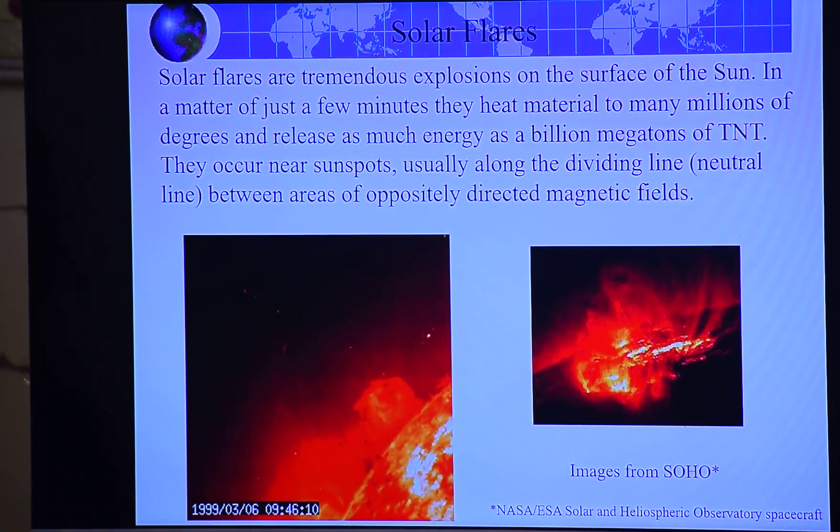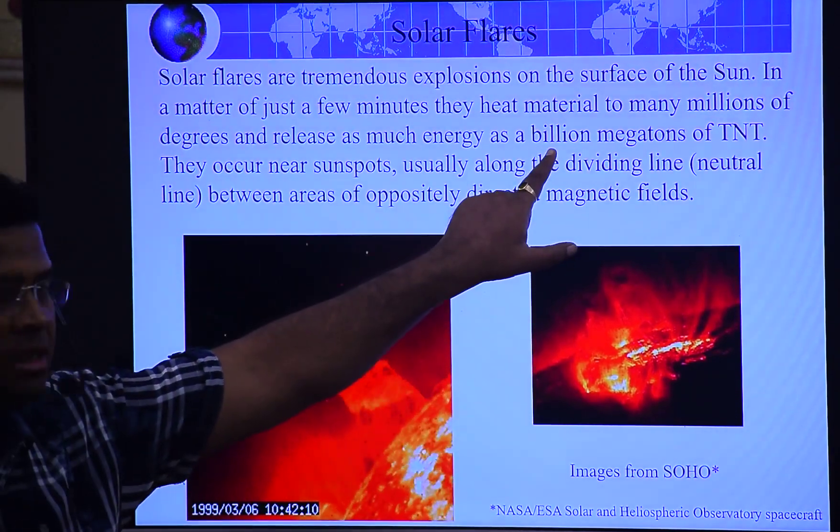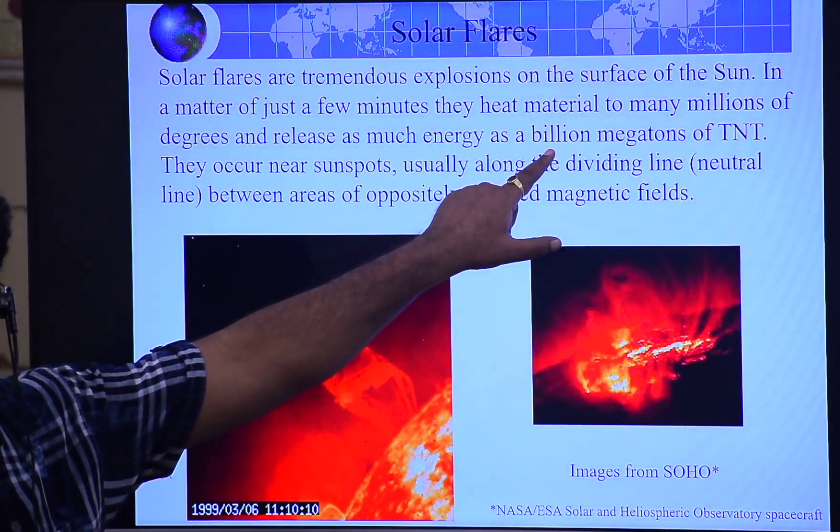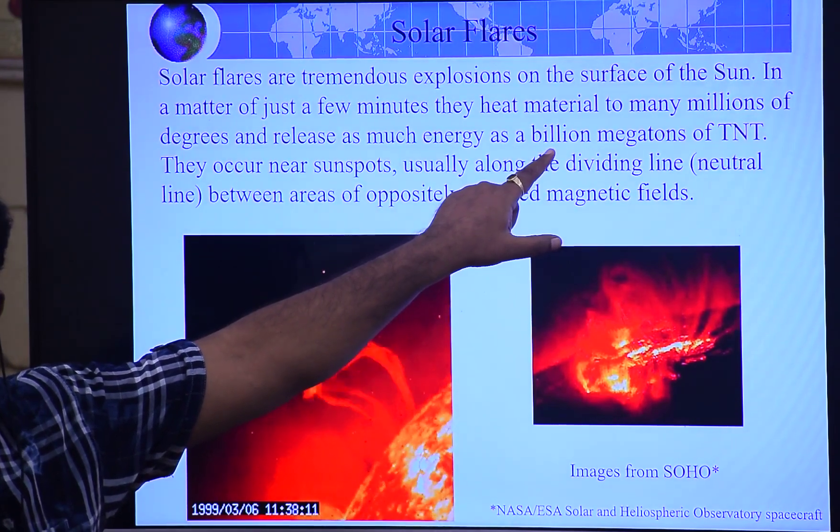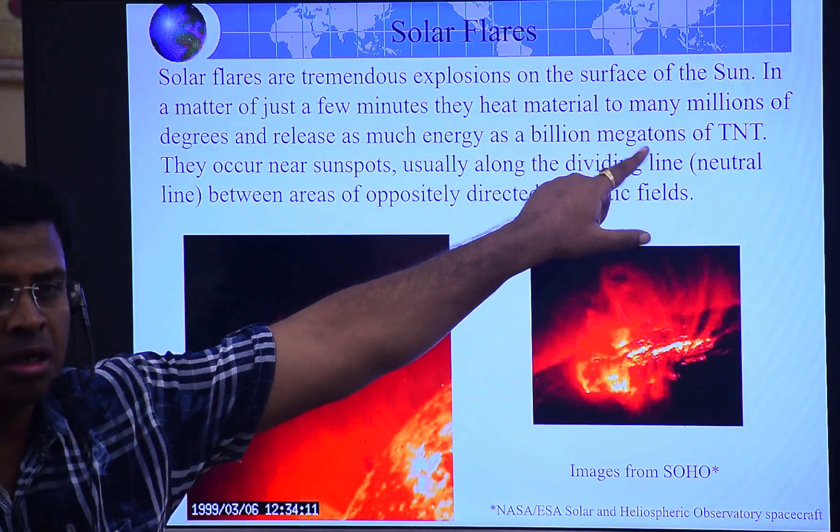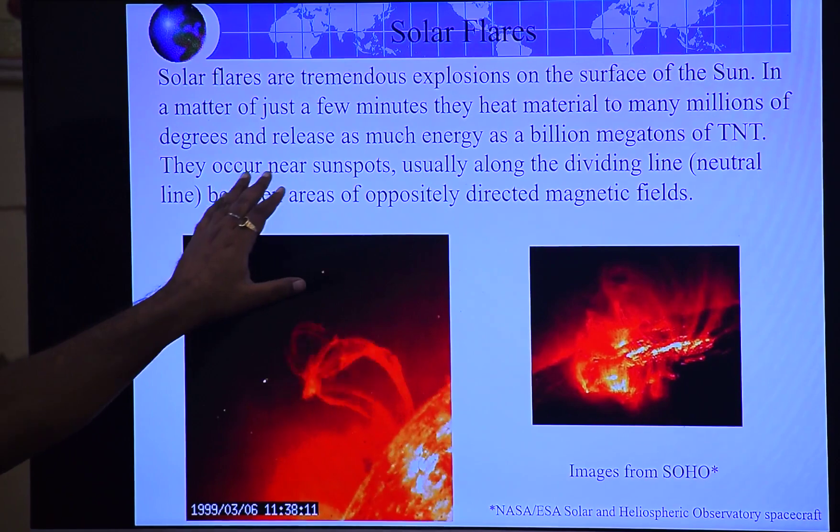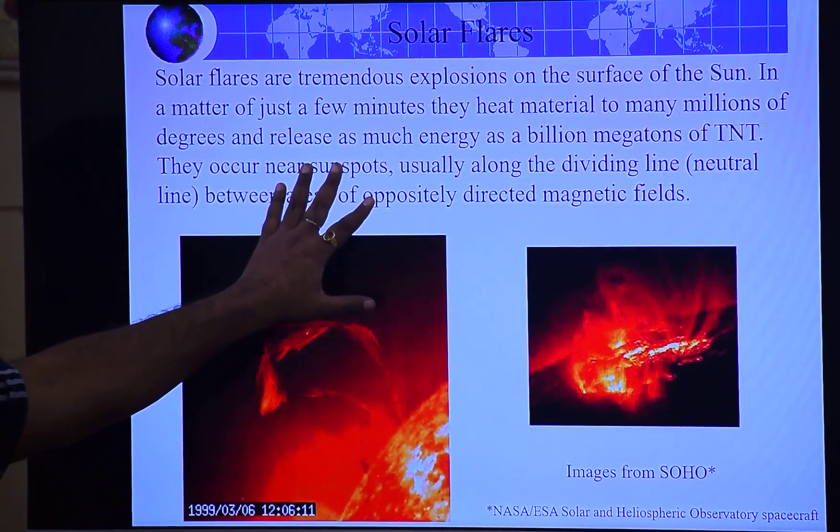Sunspots se kitna energy nikalta hai, magnetic lines of force ke form mein? Billion, not million. Billion samajhte hai na? Thousand million means ek billion. Billion - it is not ton, megatons of TNT. This much of energy is releasing, and they occur near sunspots.